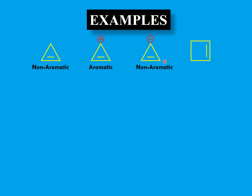Next we have a four-membered ring with a double bond — cyclobutene. Two of its carbons are sp3 hybridized, and the double bond is isolated with no conjugation. Because it fails the planarity and conjugation conditions, this molecule is non-aromatic.